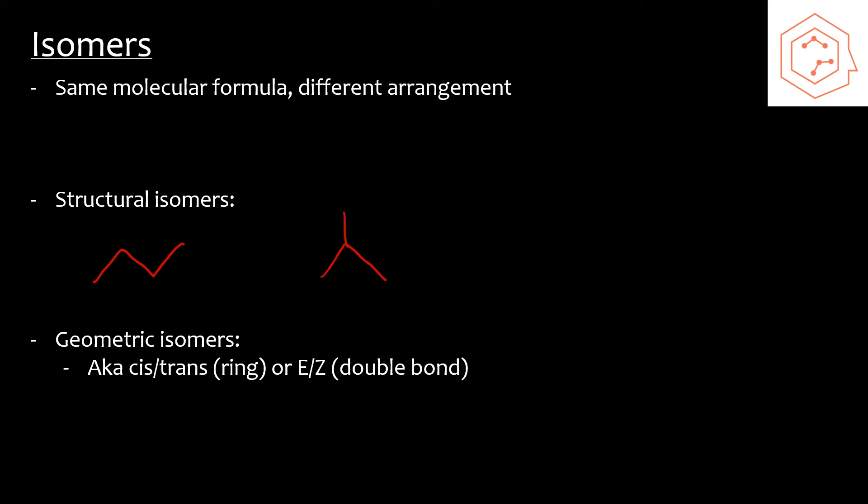Now let's talk about geometric isomers. You can have cis or trans if the structure you're talking about is a ring and referring to the substituent groups, or E/Z if it's a double bond. Let's talk about the rings first. If I have, say, dichlorohexane and it's facing towards me, this is what you call cis-1,2-dichlorocyclohexane. But if this were to go and face away from me, it would be called trans-1,2-dichlorocyclohexane.